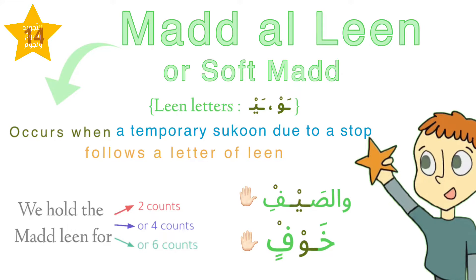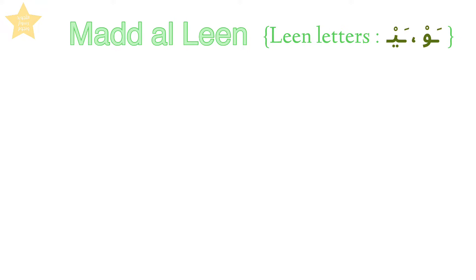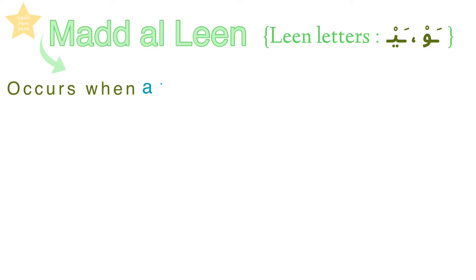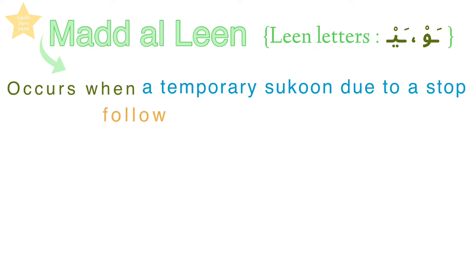Assalamu alaykum. Our lesson today is about maddillin, or soft madd. There are two letters for maddillin: the waaw and yaa with sukun on them, so long as they follow a fatha. A maddillin or soft madd occurs when a temporary sukun due to a stop follows a letter of lean.